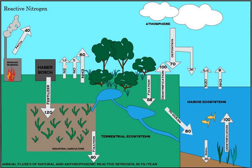Human influences on the nitrogen cycle: As a result of extensive cultivation of legumes — particularly soy, alfalfa, and clover — growing use of the Haber-Bosch process in the creation of chemical fertilizers, and pollution emitted by vehicles and industrial plants, human beings have more than doubled the annual transfer of nitrogen into biologically available forms. Humans have also significantly contributed to the transfer of nitrogen trace gases from earth to the atmosphere and from the land to aquatic systems. Human alterations to the global nitrogen cycle are most intense in developed countries and in Asia. Generation of reactive nitrogen (NR) has increased over tenfold in the past century due to global industrialization.